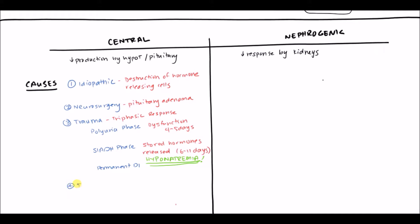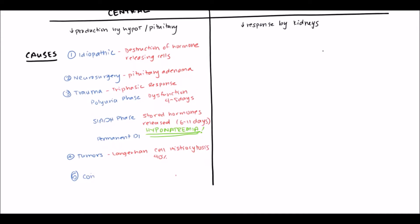Some tumors, especially invading ones, can cause diabetes insipidus. In particular, Langerhans cell histiocytosis — also known as histiocytosis X — can cause this; about 40% of patients with this condition can have diabetes insipidus. There are also congenital syndromes, such as septo-optic dysplasia (SOD), which is a defect in the pituitary and midline structures of the face, and familial central diabetes insipidus, a hereditary syndrome.